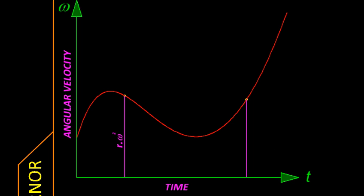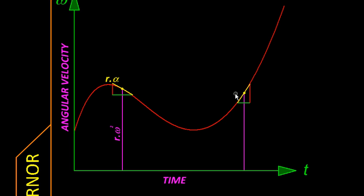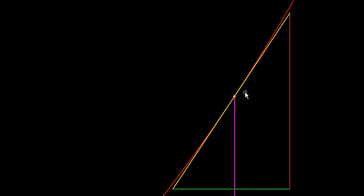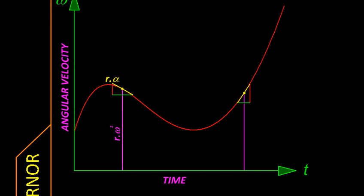But look at the slope at these two points and you will realize here the rate of change of angular speed, which is alpha, is negative—the speed is reducing—while here the slope is positive, and therefore what we can do here is going to be different.